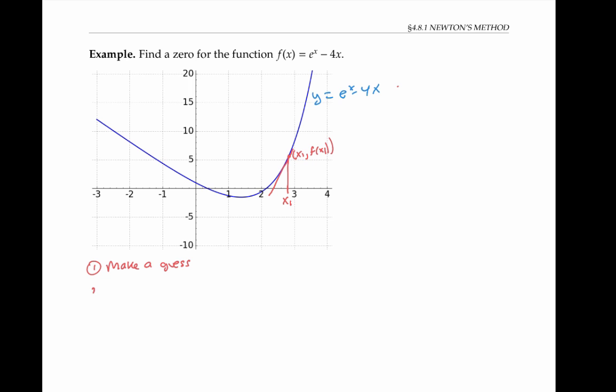The second step will be to find this tangent line. Since the tangent line is a reasonably good approximation to the function, the point where the tangent line crosses the x-axis should be closer to the point where the function itself crosses the x-axis, which is the point I'm looking for. So the third step will be to find the x-intercept for the tangent line.